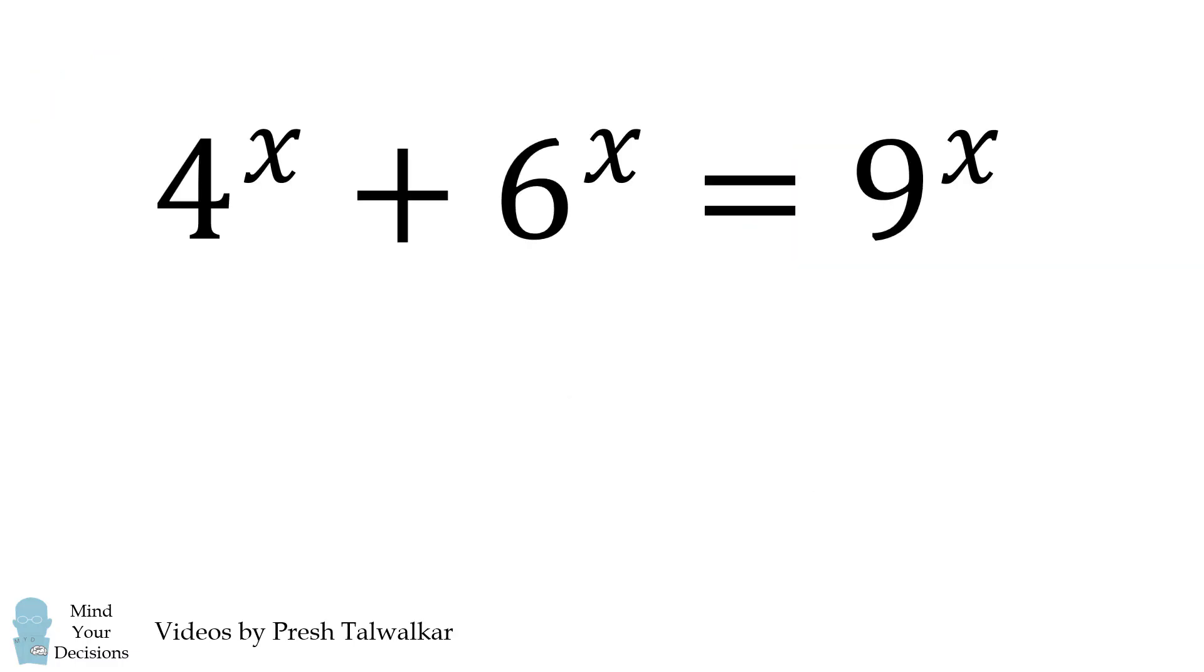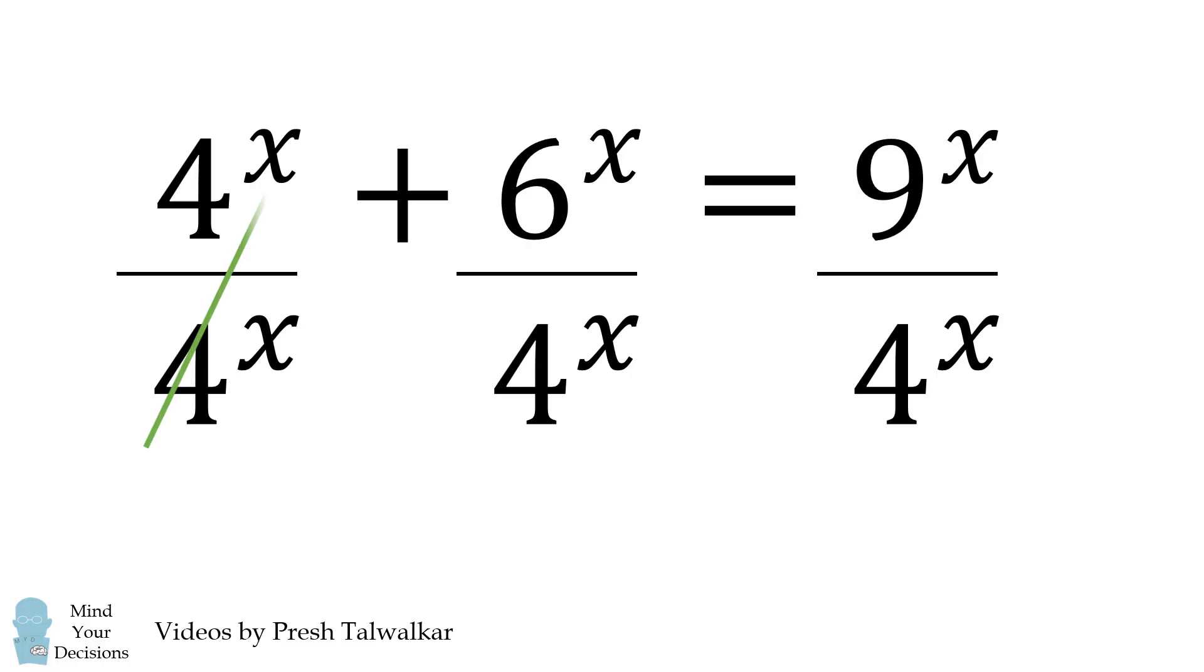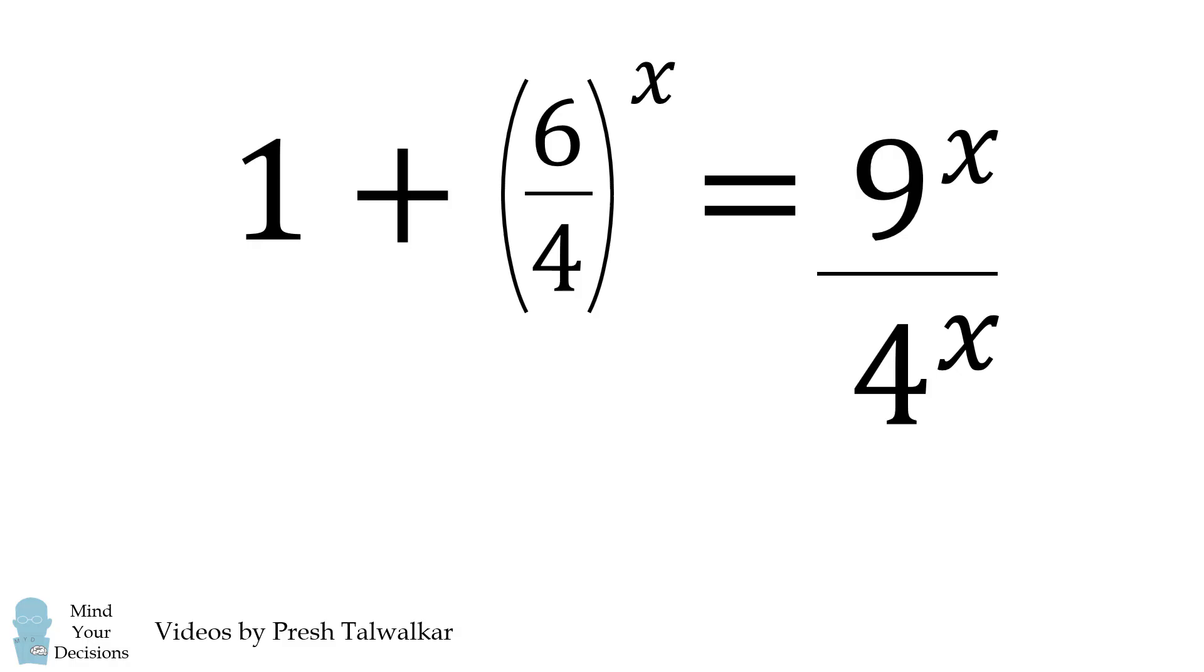We'll get started by dividing each term by 4 to the power of x. The first term simplifies to be 1. The next term becomes 6 over 4 all raised to the power of x. And the third term becomes 9 over 4 raised to the power of x.